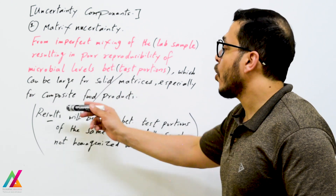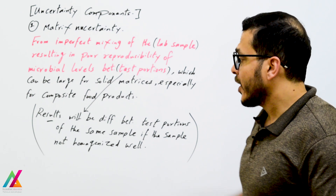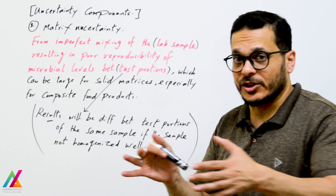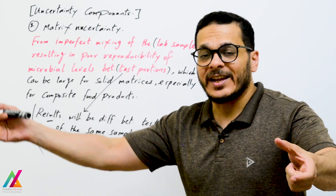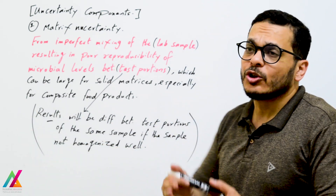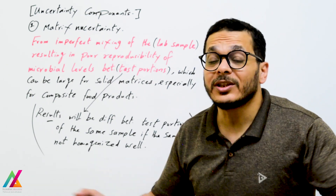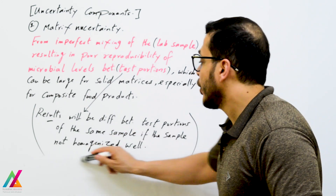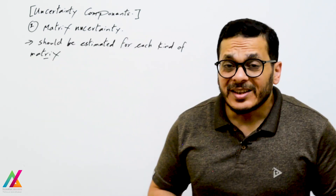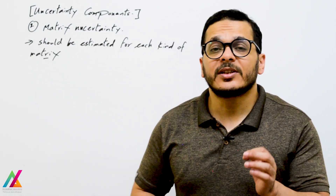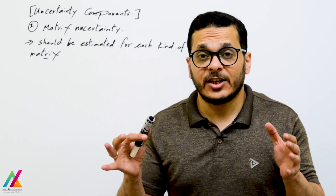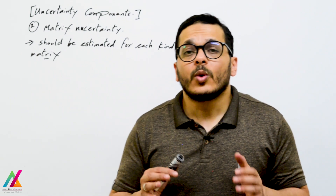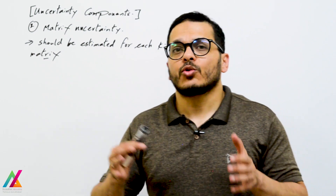Imperfect mixing results in poor reproducibility of microbial levels between test portions, which can be large for solid matrices, especially for composite food products. Results will be totally different between test portions when the lab sample is not homogenized well. Matrix uncertainty should be estimated for each kind of matrix because homogenization is a high source of uncertainty in microbiological analysis.